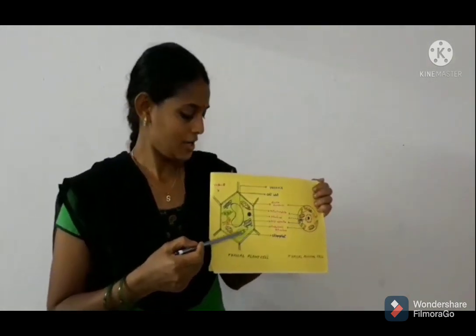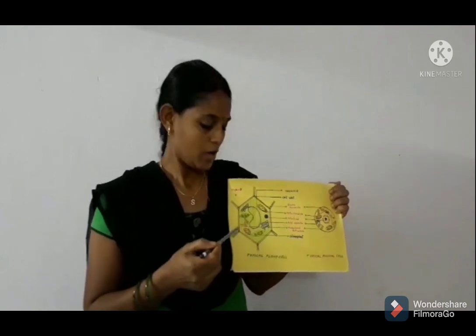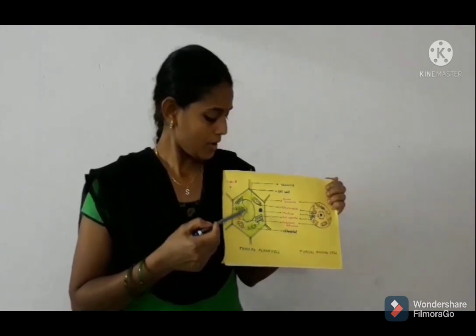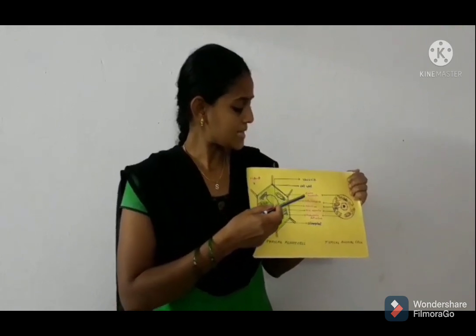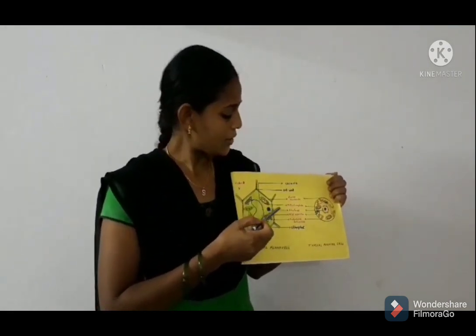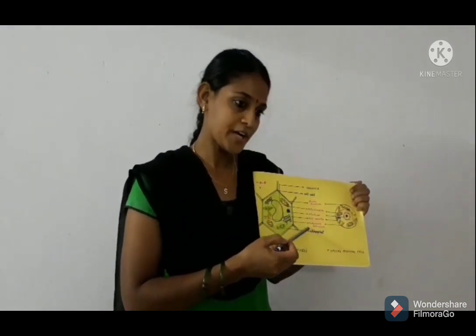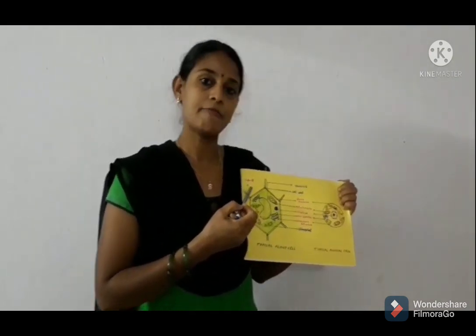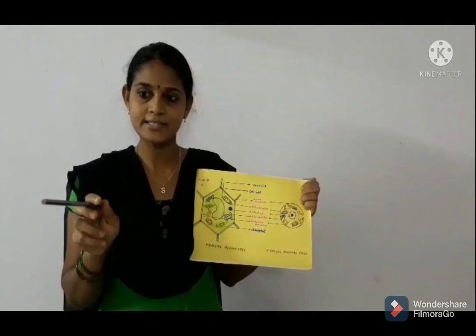We have already discussed about cell discovery by Robert Hooke. Now let us discuss the typical plant cell and typical animal cell. Plant cell has a cell wall, plasma membrane, cell membrane, mitochondria, nucleus, Golgi apparatus, endoplasmic reticulum, chloroplast, and vacuoles. These are the parts of a plant cell.